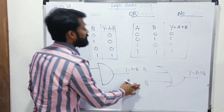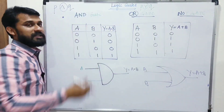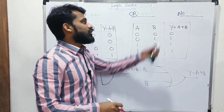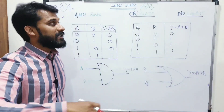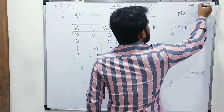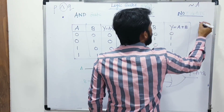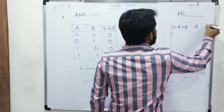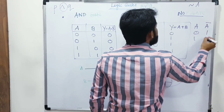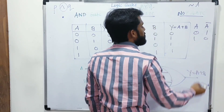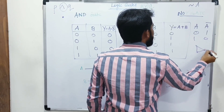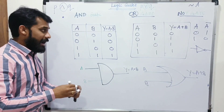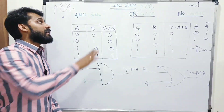NOT gate is basically negation. If input A is 0, output is 1; if input A is 1, output is 0. The notation is A-bar (Ā). The symbol for NOT gate is a triangle with a small circle at the output. So we have AND gate, OR gate, and NOT gate as the three basic gates.